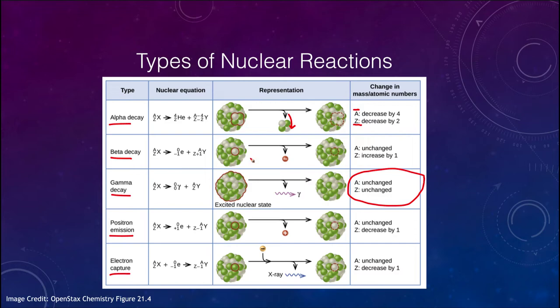For beta decay, we eject an electron from the nucleus. That event essentially turns a neutron into a proton to keep the charge the same. This does not change the mass — the mass will remain the same — but the atomic number will increase by one because one of those neutrons was converted into a proton.